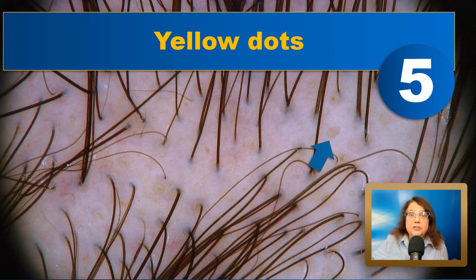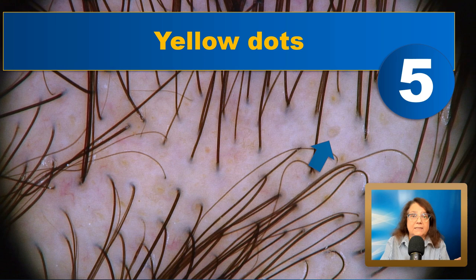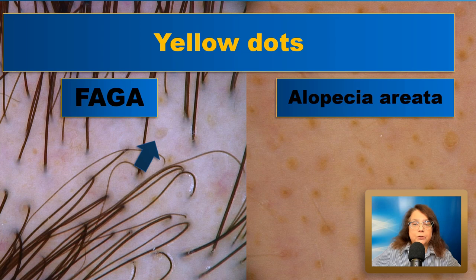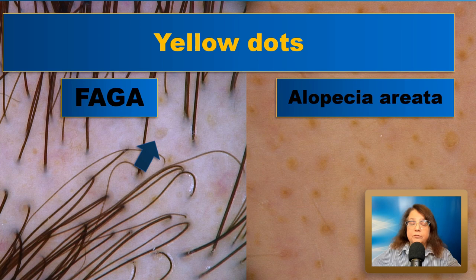Feature number five: the yellow dots. Yellow dots mark empty hair follicles filled either with sebum or keratotic material. In androgenetic alopecia they are usually filled mainly with sebum, so they can be easily wiped off with an alcohol pad. Comparing yellow dots in female androgenetic alopecia versus alopecia areata: in androgenetic alopecia the yellow dots appear in pairs, distributed between normal-looking hairs; whereas in alopecia areata, the entire field of view is typically full of yellow dots.